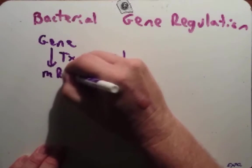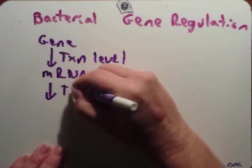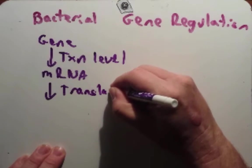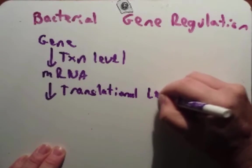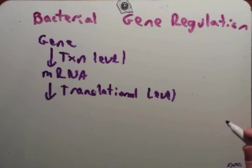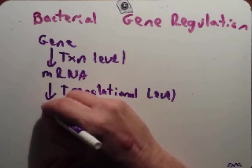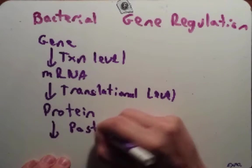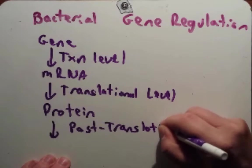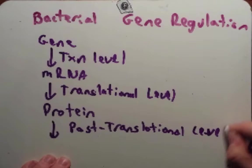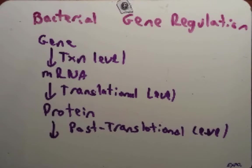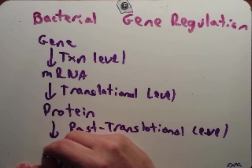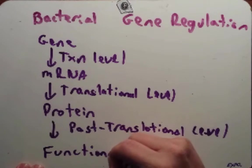Once messenger RNA is made, before it gets translated, there is translational-level regulation. Before that messenger RNA can be made into a protein, there are various mechanisms that can be used to regulate whether or not it will make a protein. And then finally, after that protein is made, we can have post-translational control — the protein is made but it's often not functional until it's been modified in some way, and then we end up with a functional protein.